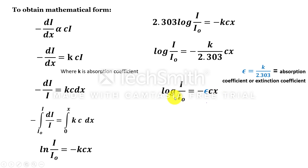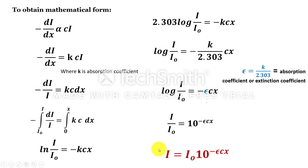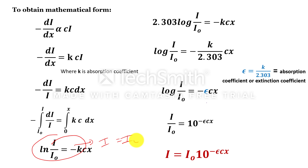This is the logarithm to base 10. So we can write this expression as I/I₀ = 10^(−εcx), or I = I₀ × 10^(−εcx). This is the mathematical expression of Beer-Lambert's law. If we write it in the natural logarithm form, it will be I = I₀ e^(−kcx). Since it is a natural logarithm to base e, the exponential factor will be e^(−kcx), whereas for log base 10, it will be 10^(−εcx).